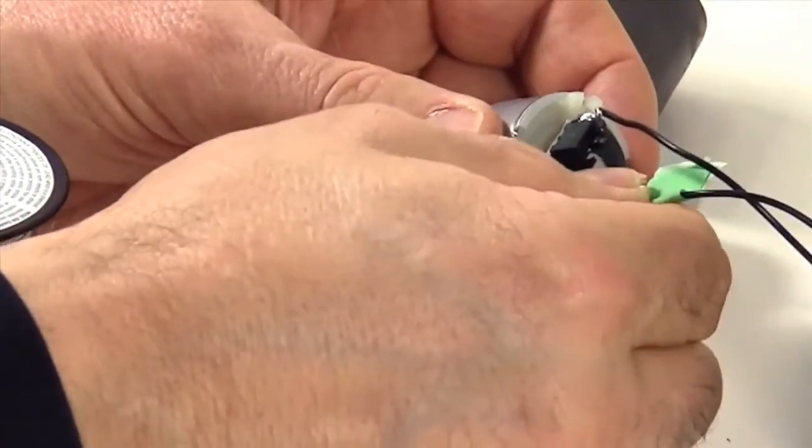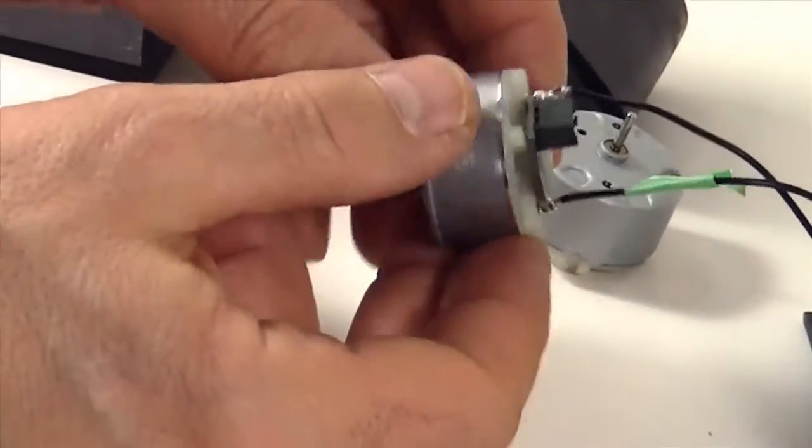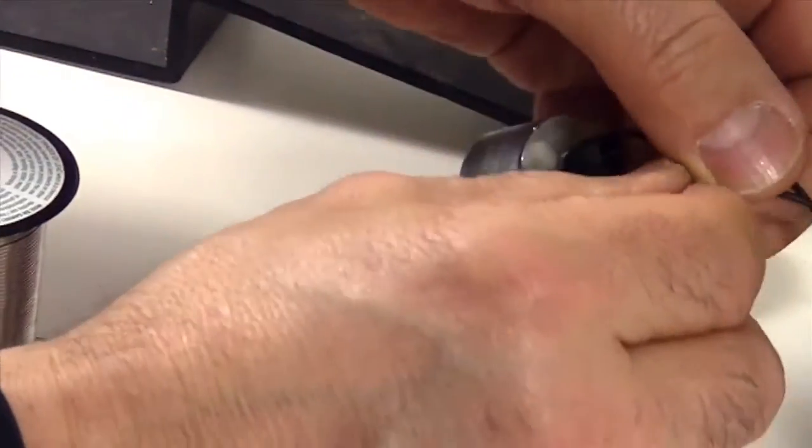Check the wires to make sure they're secure. And now we can remove the piece of tape.